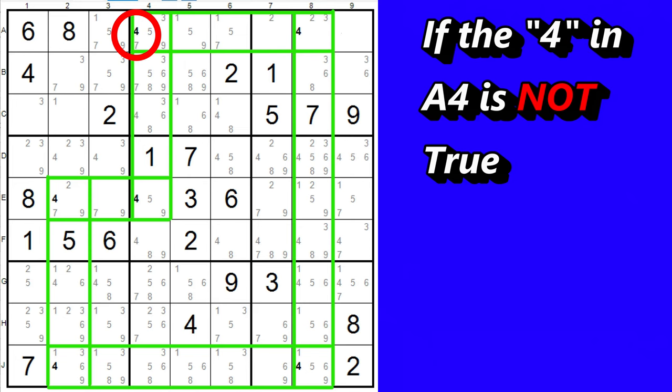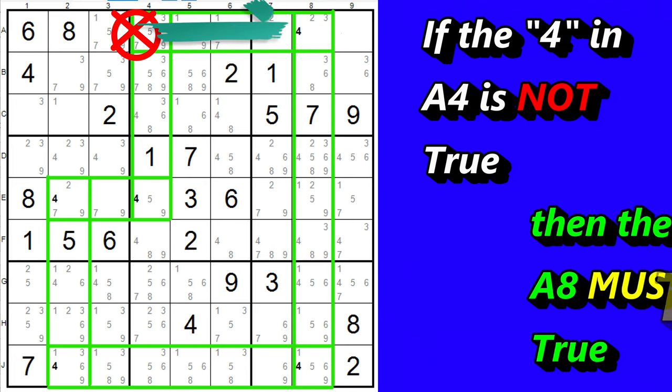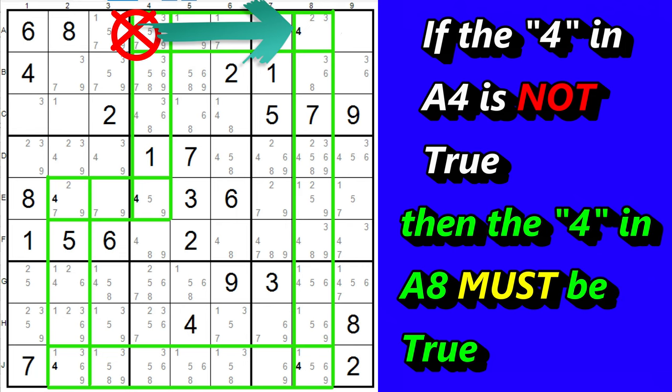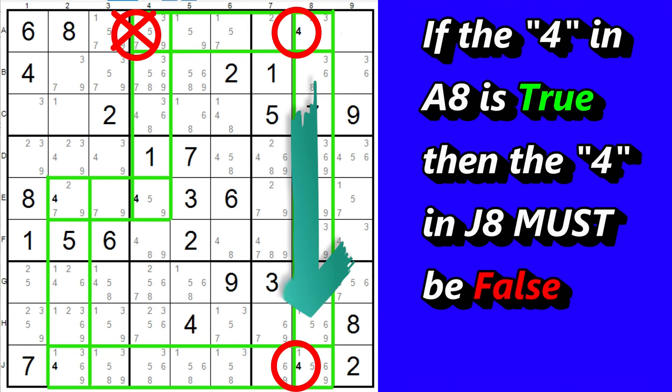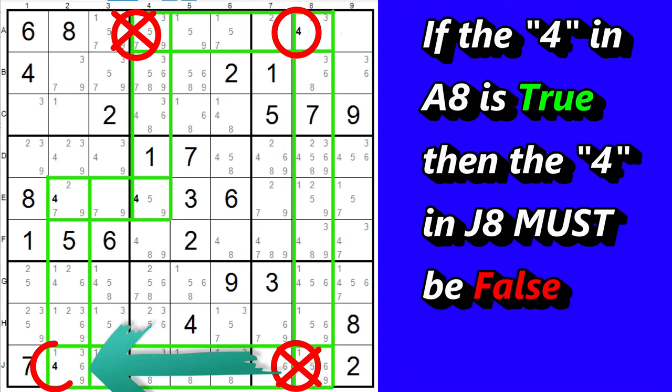If this 4 in row A, column 4, is not true, then the 4 in row A must be in column 8. Then the 4 in row J, column 8, cannot be true.